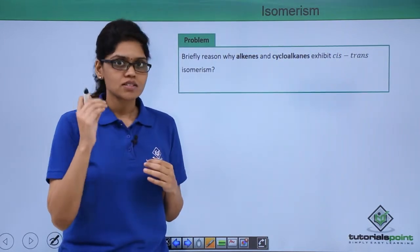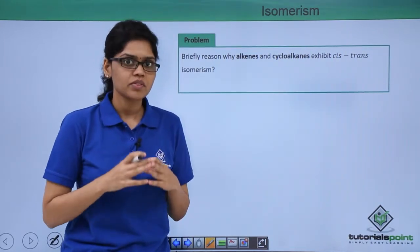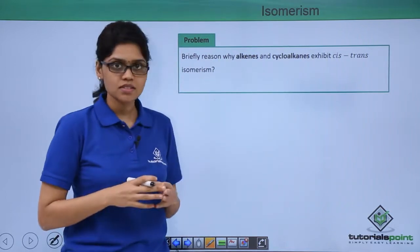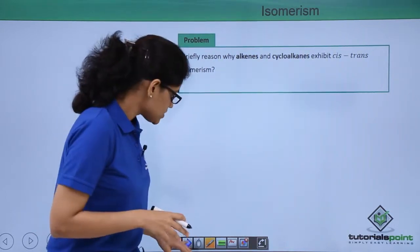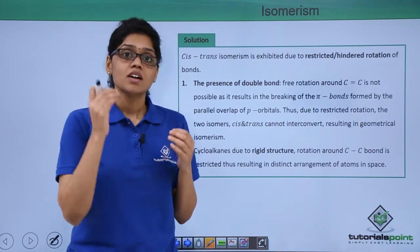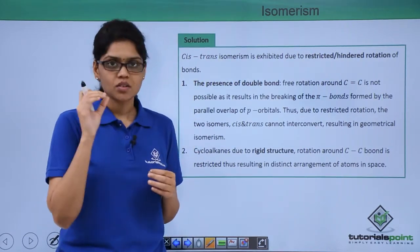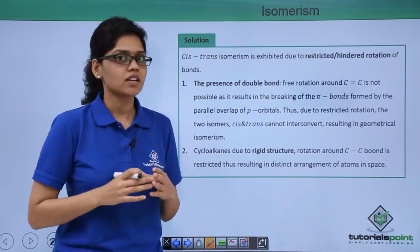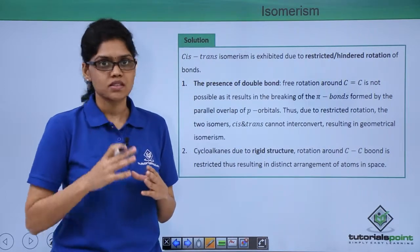If you have studied the concept of geometrical isomerism properly, we can easily recollect the answer to this which is very direct. Let us try to solve this particular problem. We know that geometrical isomerism arises in compounds where there is restricted rotation or hindered rotation of C-C bonds.